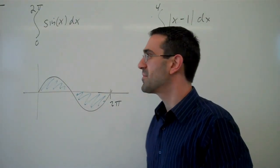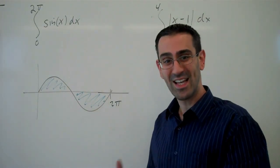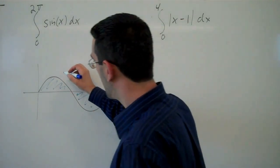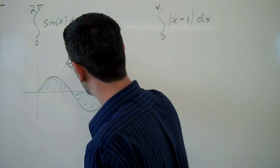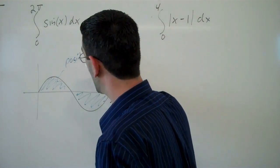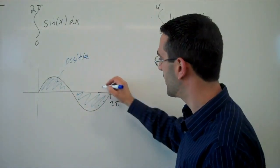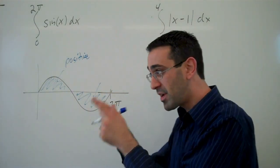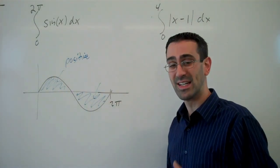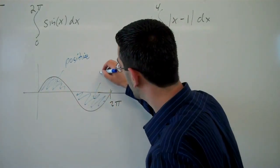But you might remember that the definite integral is a signed area. And so whatever this area is will count as a positive quantity. The definite integral will be positive there. And here, because the function values are negative, when we multiply that width times that height, we're going to get a negative quantity here.